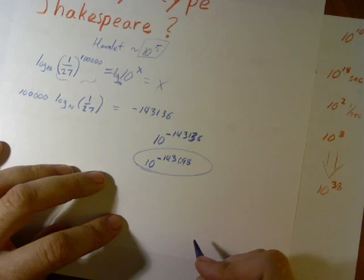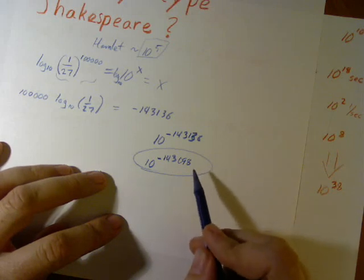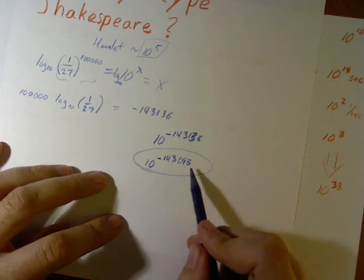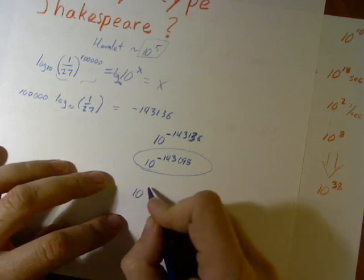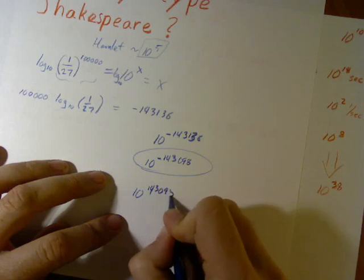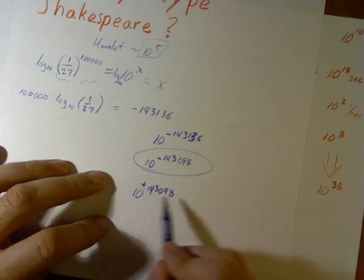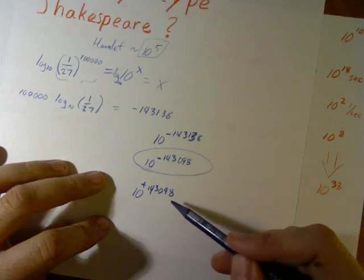Okay. You know what? Big numbers, you know, they fool you. How big is this number really? This means if our universe were to repeat itself 10 to the 143,098 times